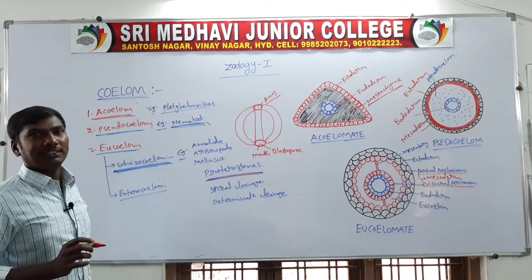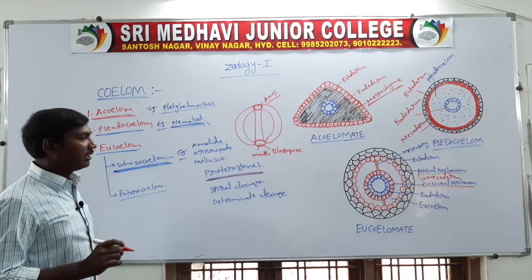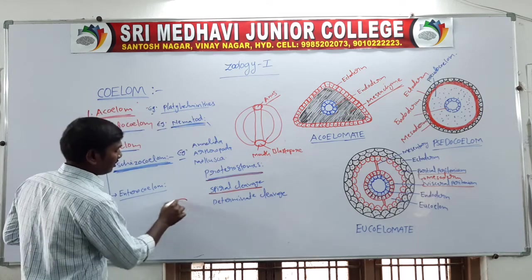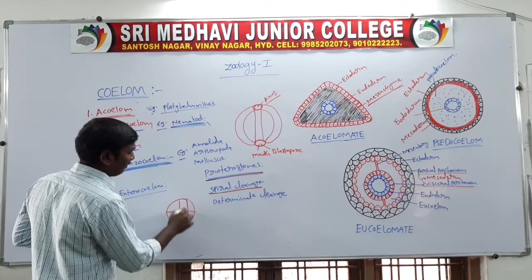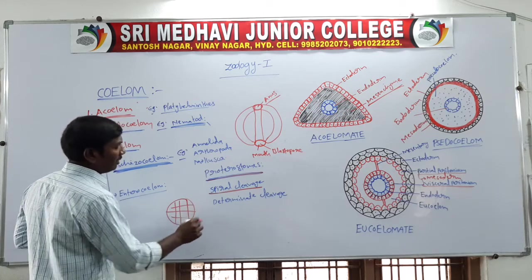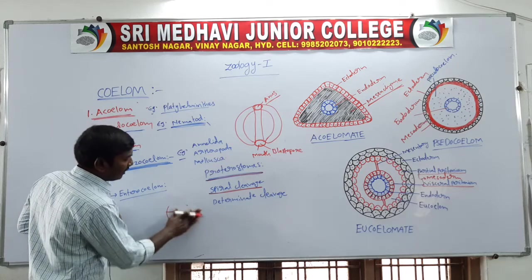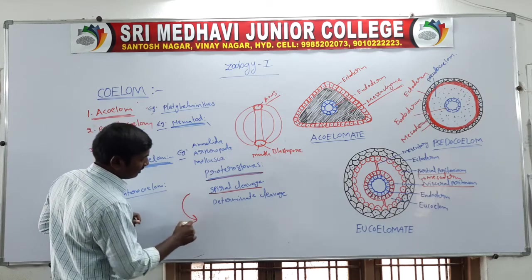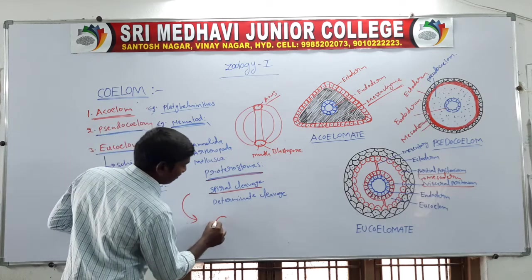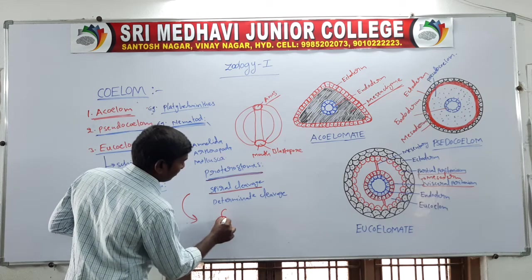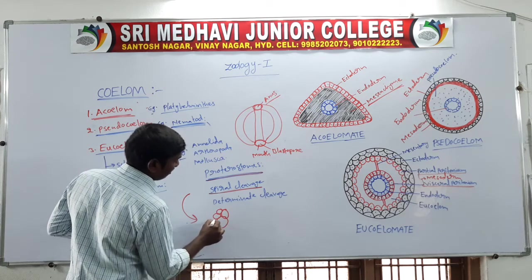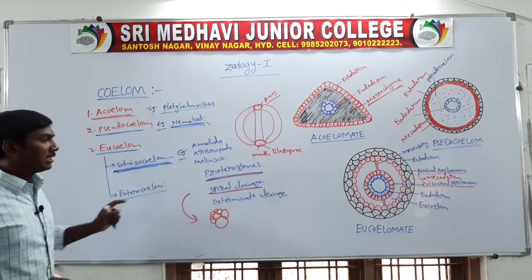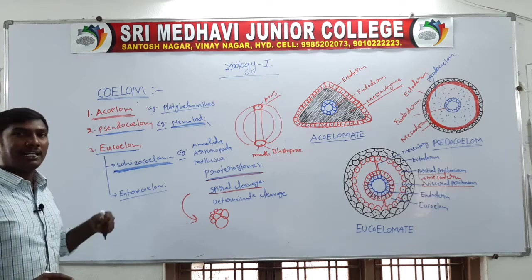Next is spiral cleavage: one cell divides into two, two into four, four into eight, eight into sixteen. This type of cleavage is called spiral cleavage. Next is determinate cleavage: in the embryo, particular regions are determined for particular organ formation — one region forms the head, another the heart, another the liver. This type of cleavage is called determinate cleavage.